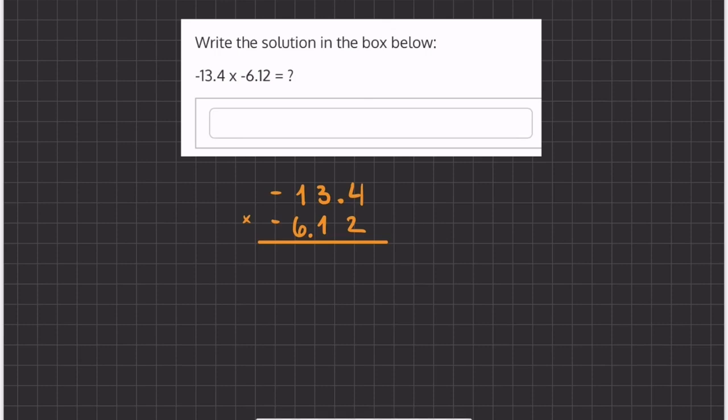Okay, so in this problem we are multiplying two decimals by one another. When we're multiplying decimals, it doesn't matter where our decimal is, we want to line up all of our numbers accordingly.